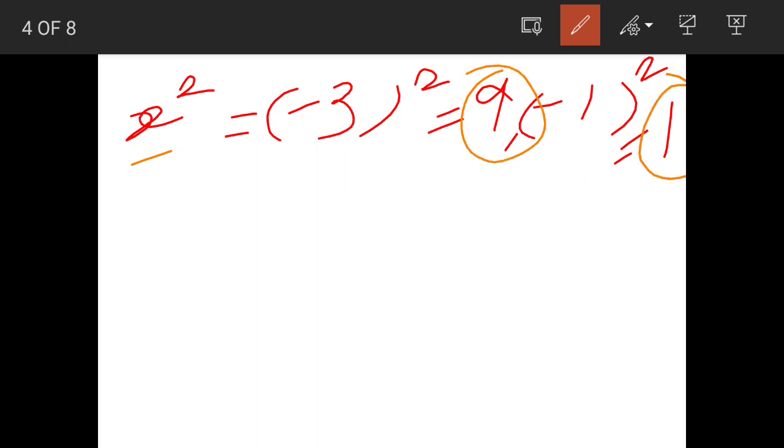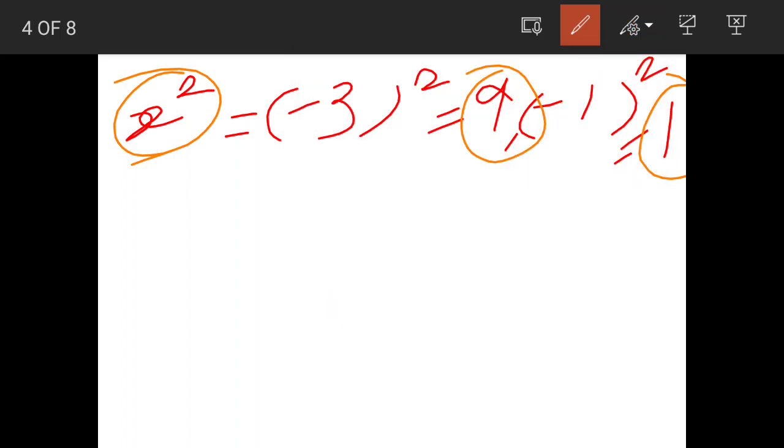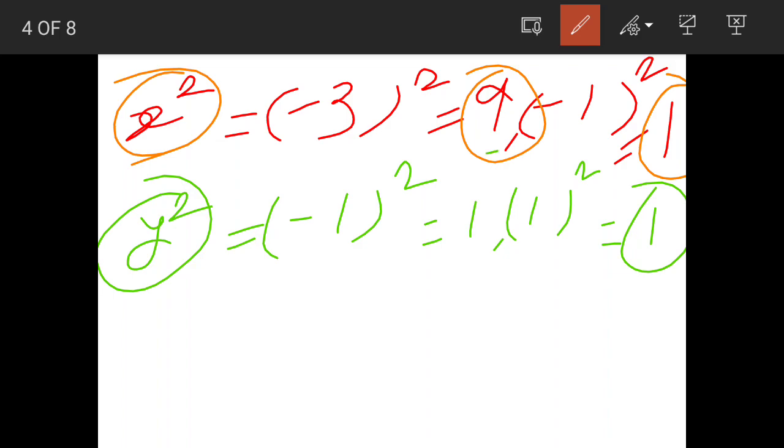Now let's see the values of y². y² will have only one value because it is either (-1)² which equals 1, or 1² which also equals 1. So y² will have only one value, that is 1. So x² has two values, 9 or 1, and y² has only one value, that is 1.